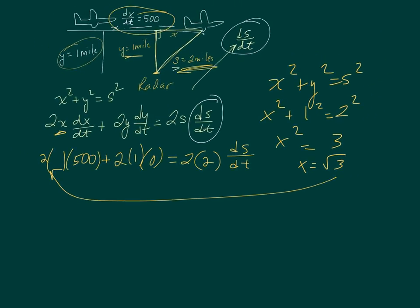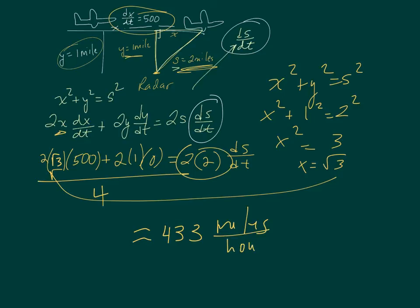Substituting the square root of 3 for x, I multiply all this together and then divide by 4. So I end up with approximately 533 miles per hour.